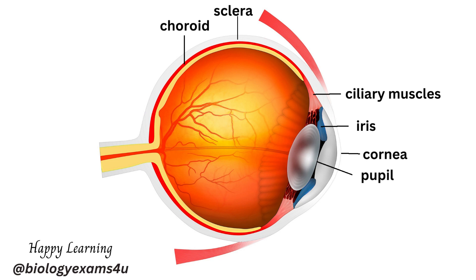The ciliary muscle enables the lens of the eye to focus on near objects. The inner layer is known as the retina — a thin layer of tissue that lines the back two-thirds of the eyeball. The retina is covered with sensitive photoreceptors called rods, for dim light, and cones, for bright light. The retina converts light into electrical impulses that are sent to the brain through the optic nerve.